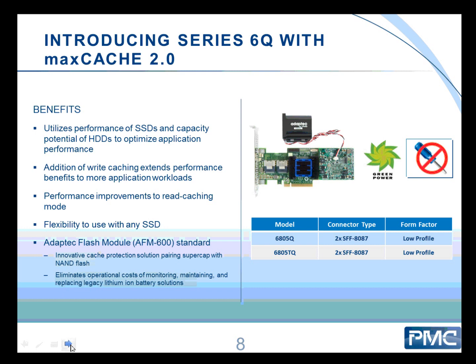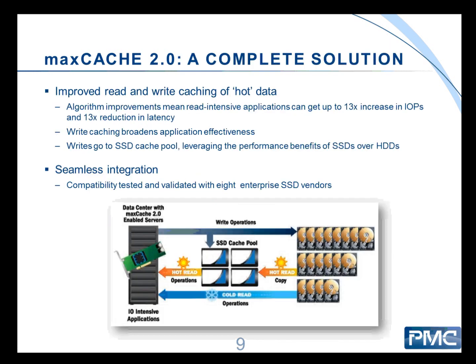On all controllers you can use SSDs in arrays, but if you want to use the SSD caching feature it needs to be the Q controller. The Q controller is also always shipped with the AFM 600, so you always have that DRAM cache backup in case of power loss. So what is MaxCache 2.0? SSDs are very fast with random access — the real advantage of SSD compared to HDD is random access, because there's no mechanical seeking going on.